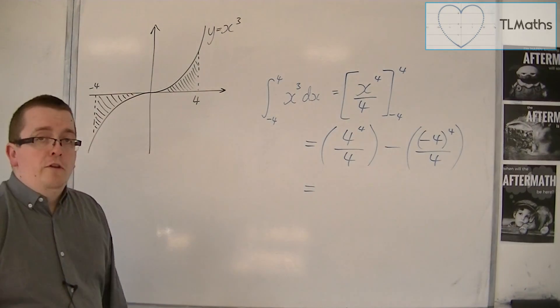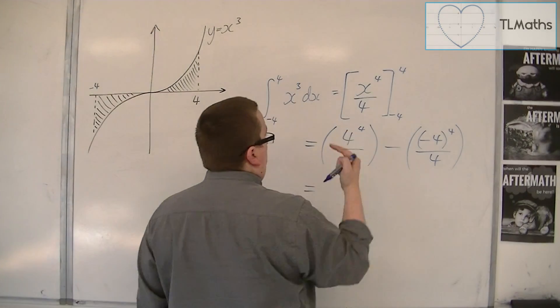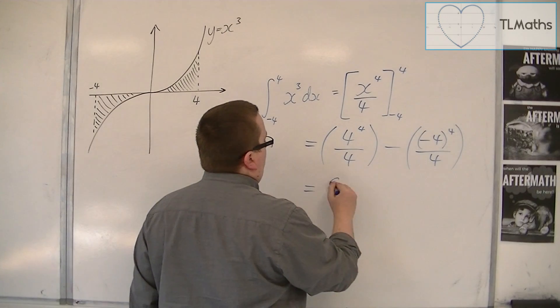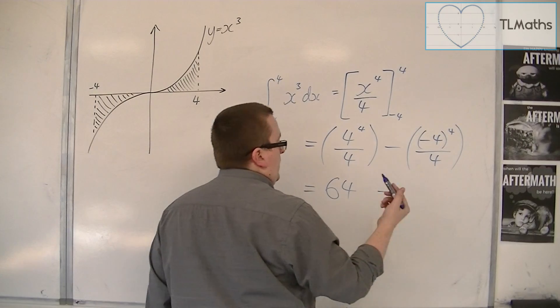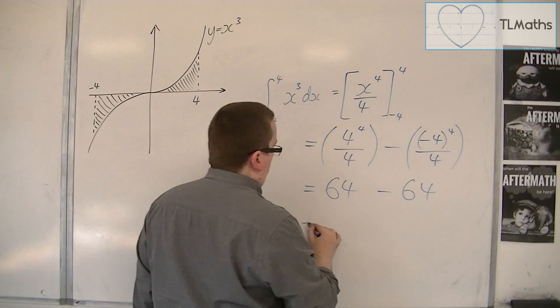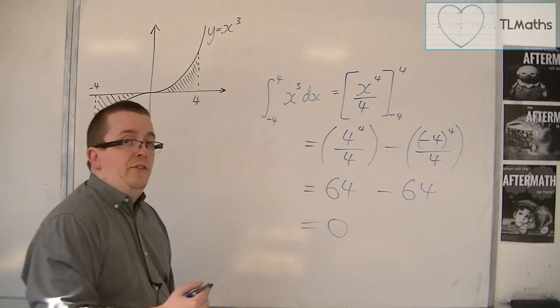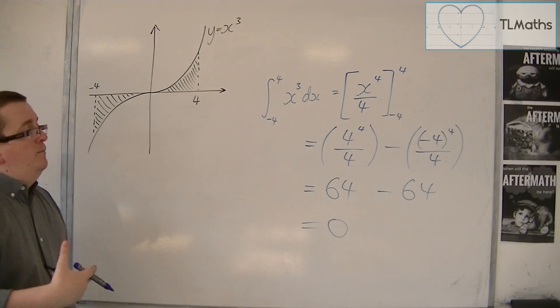Well 4 to the 4 over 4 is 4 cubed which is 64, and minus 4 to the 4 over 4 is also 64. And so actually this integral is 0.